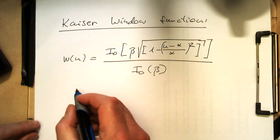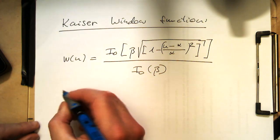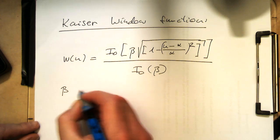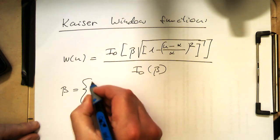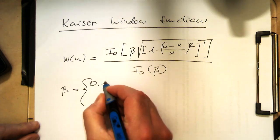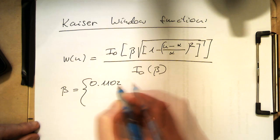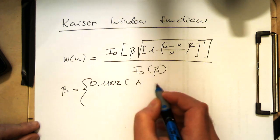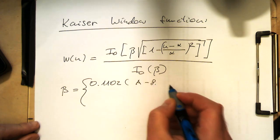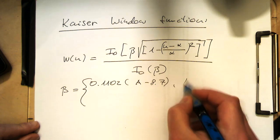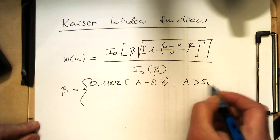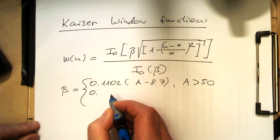That's again, as I said earlier, an empirical measure. We are getting numbers which have been found out to be useful or valid. So if A is greater than 50, we take this formula.